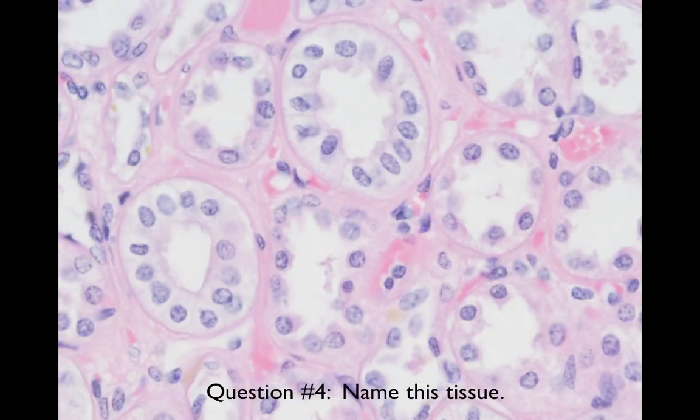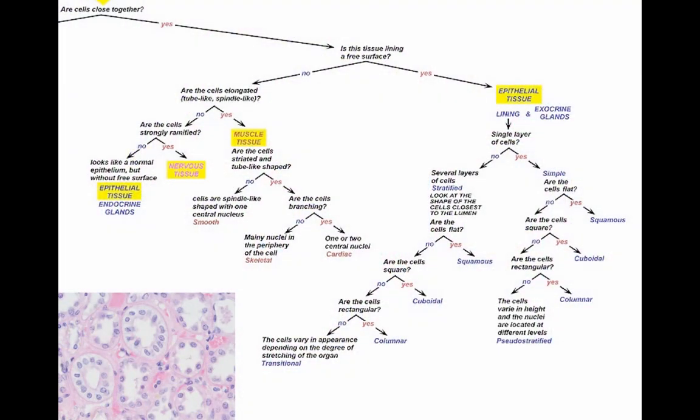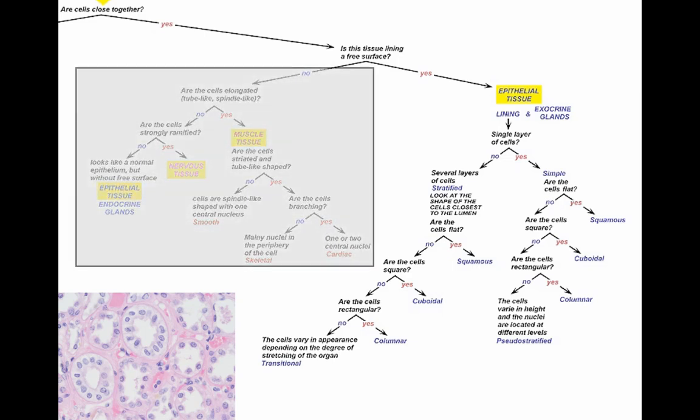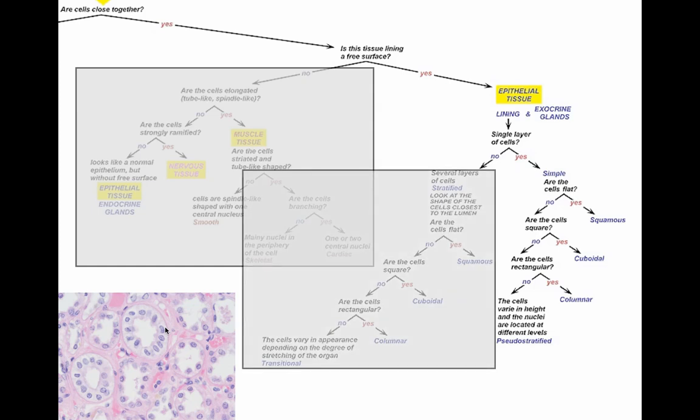Name this tissue. Are the cells tightly packed or any spaces in between? Certainly, you can see that the cells are tightly packed. Do you see a free edge? And yes, you do. This is actually glandular tissue. These little guys are lining an opening. It's actually a duct. Is there a single layer of cells? Yes. Are the cells flat? No, they're not flat. Are they square? Actually, they're square. They're the shape of little cubes. So this tissue is called simple cuboidal epithelia. This is a really common tissue that you'll see in many glands.